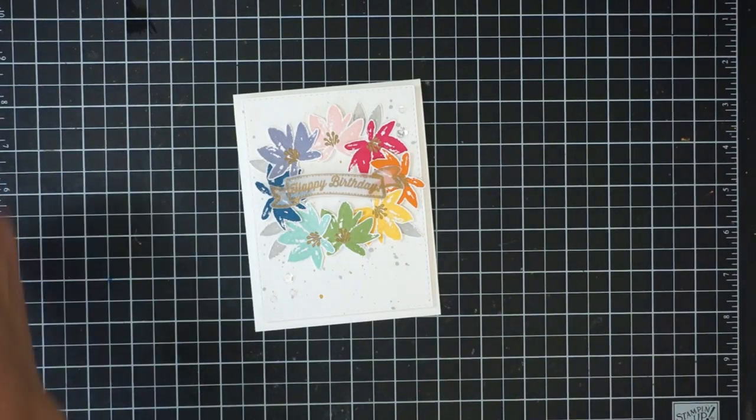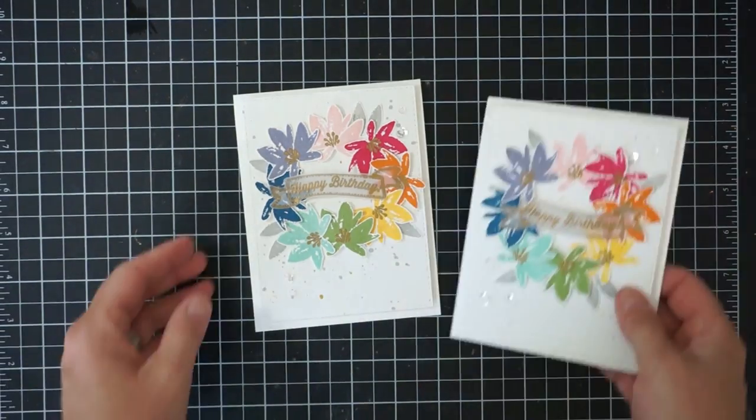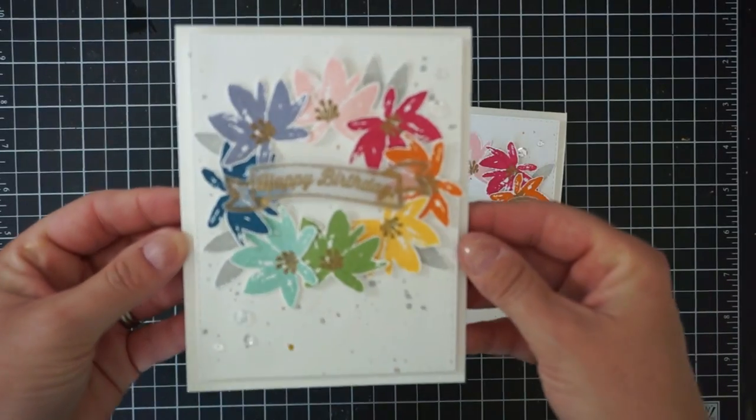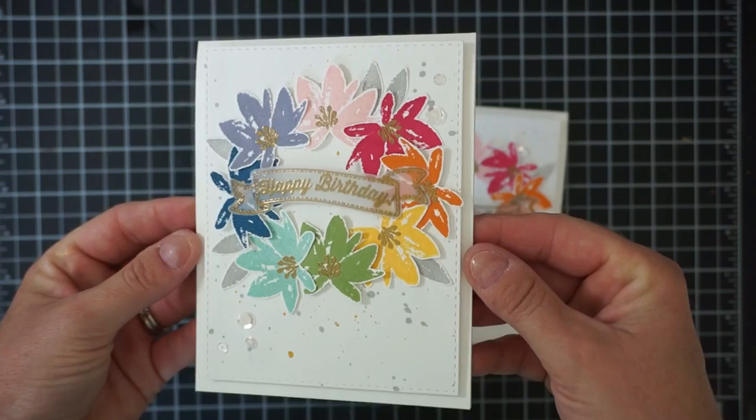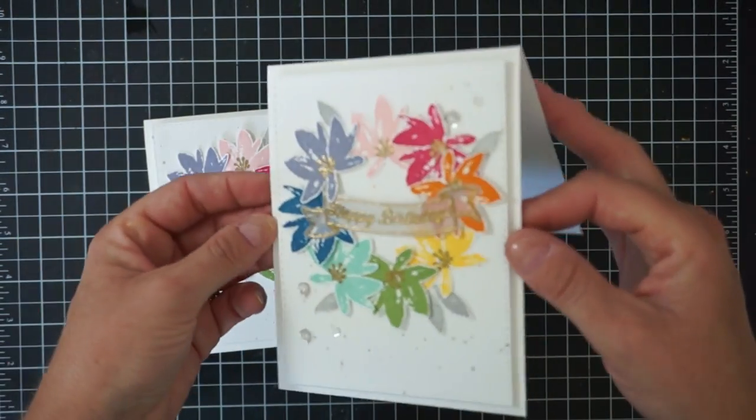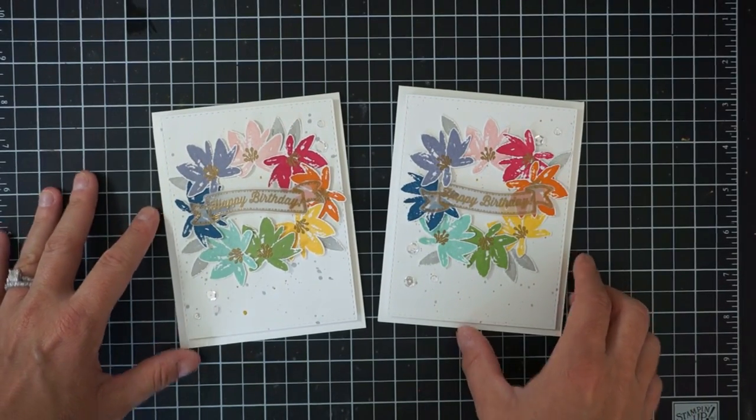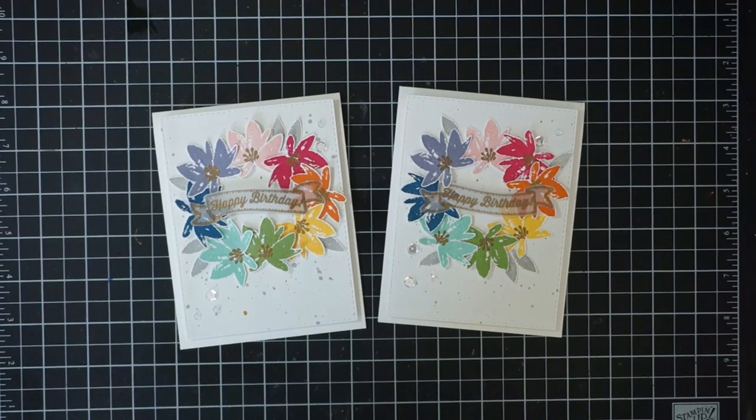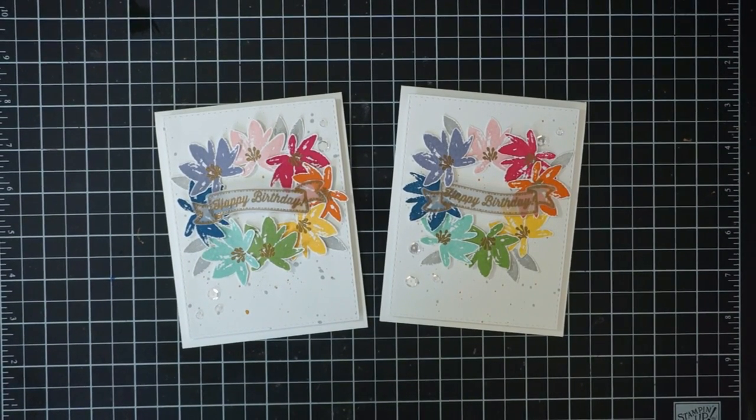That is the card for today. Look at your stash and see what floral images you have - you don't have to use this stamp set to create this card. I'm sure you have all kinds of floral images that you can use to make a rainbow wreath on your card. Thank you guys for joining me today. If you have any questions head on over to my blog at www.thestampcycle.com and I will catch you guys on the next video. Until then, bye!